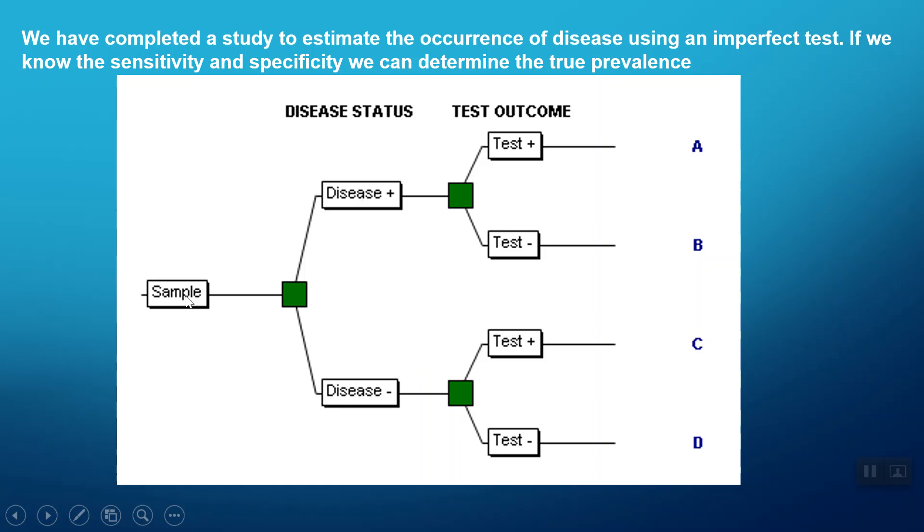So any randomly selected animal could be one of four options: it could have disease and test positive, have disease and test negative, not have disease and test positive, or not have disease and test negative.